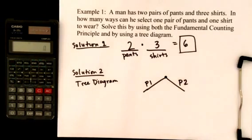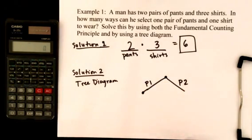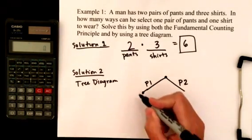So if you're coming along the first branch, he selected pants number one. If you're coming along the second branch, he selected pants number two. At this point, he selected his pants, and now he's going to select the shirt. If he selected pants number one, he could select shirt number one.